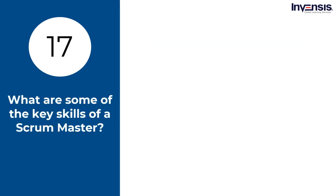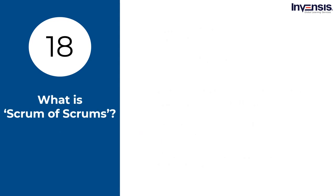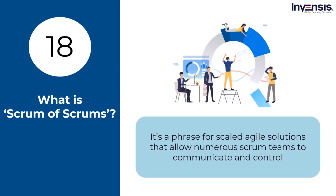What are some of the key skills of a Scrum Master? These include a solid understanding of Scrum and Agile ideas, organizational skills, the ability to train and educate the team to follow Scrum methods, familiarity with the technology utilized by the team, and the capacity to deal with and settle issues promptly. What is Scrum of Scrums? It's a phrase for scaled Agile solutions that allow numerous Scrum teams to communicate and coordinate. It works best where teams are working together on complicated projects and is used to assure appropriate levels of transparency, cooperation, and adaptation.